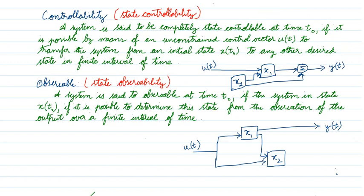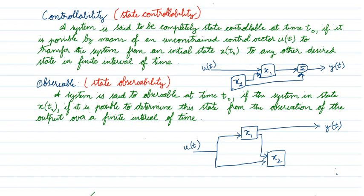Controllability is of two types: state controllable and output controllable. Mostly state controllability is what is asked. A system is said to be completely state controllable at time t₀ if it is possible, by means of an unconstrained control vector u(t), to transfer the system from initial state x(t₀) to any other desired state in a finite interval of time.